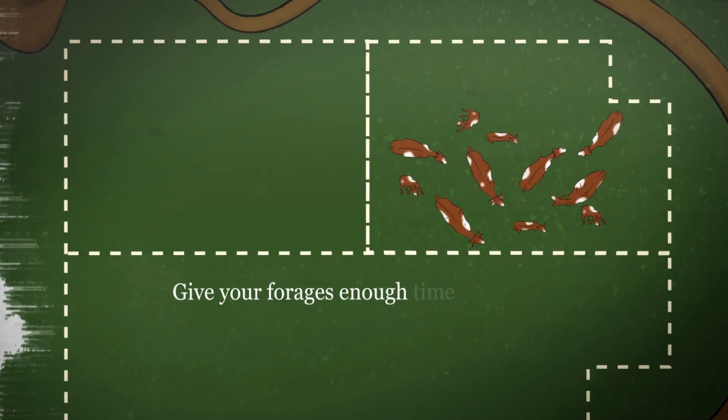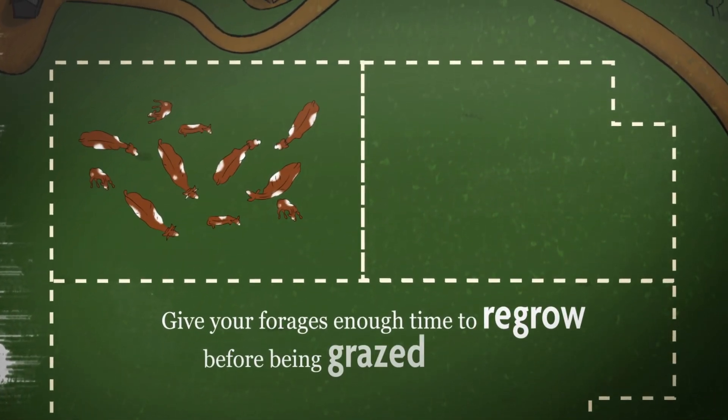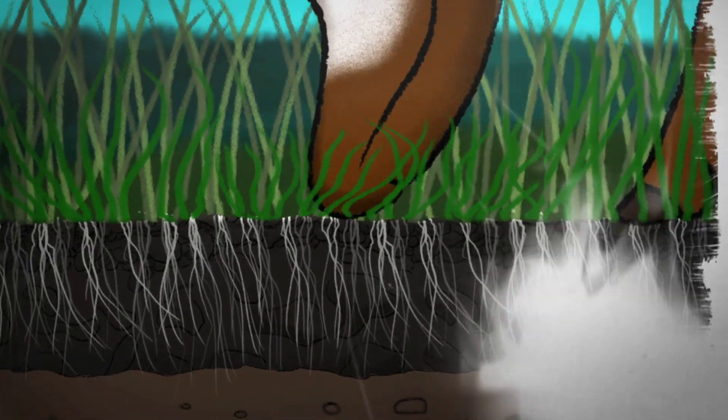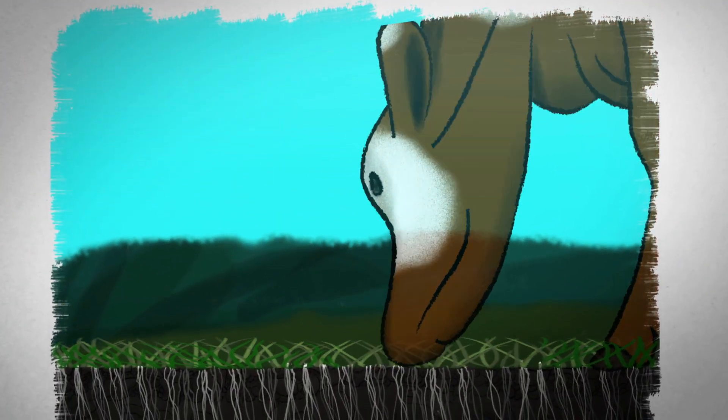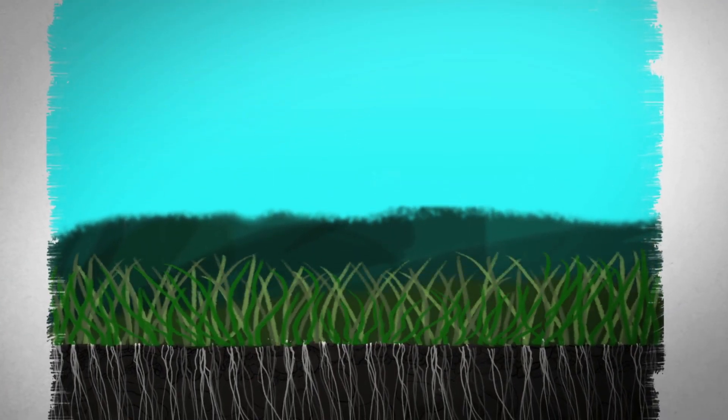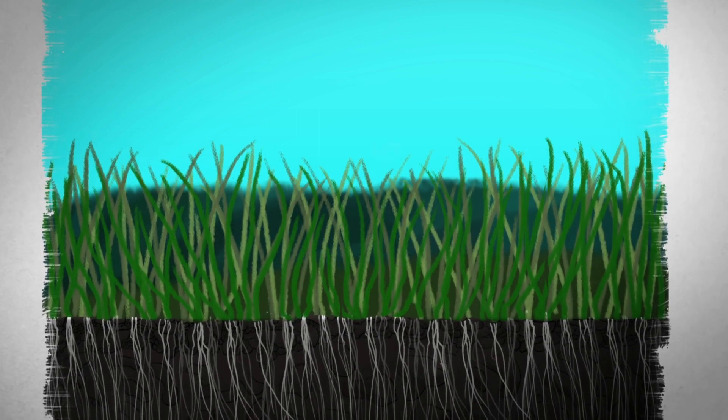The goal is to give your forages enough time to regrow before being grazed again. Regularly rotating animals requires more labor and fencing than continuous grazing, but does wonders for pasture plant vigor and soil health.